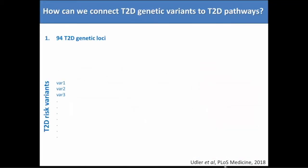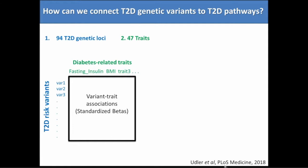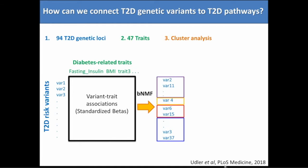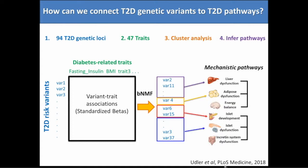We applied a clustering algorithm to 94 type 2 diabetes genetic loci, using publicly available GWAS summary statistics across a bunch of traits related to glycemia, anthropometrics, and various labs like lipid measures, leptin, adiponectin, and fatty acid levels. We took those genetic variants and looked at how they relate to all these different traits. The concept is to bin together variants that are acting along the same pathway and therefore affect all these other phenotypes in the same way — for example, a set of variants increasing BMI, waist circumference, and triglycerides looks like an obesity phenotype — and by grouping them, you can infer the mechanistic pathway.